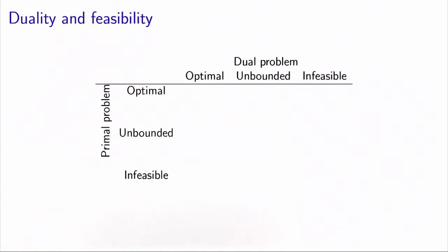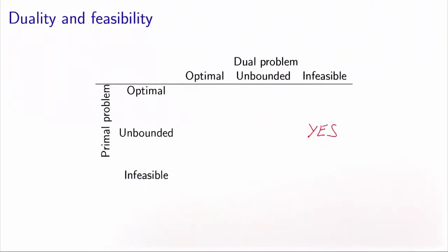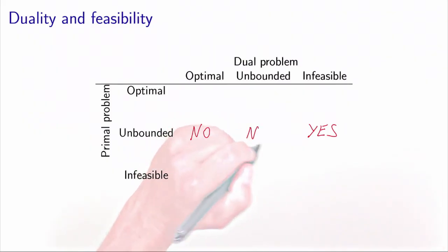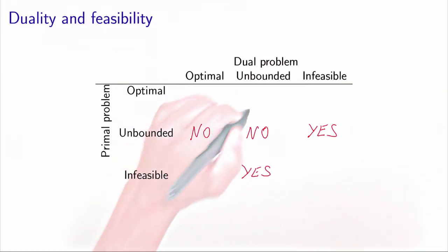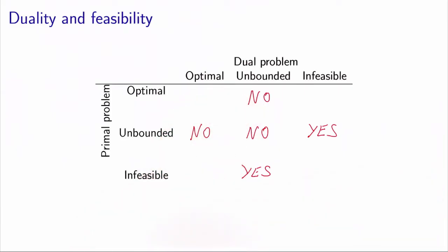We can look at the relationship between duality and feasibility using a table. The primal problem can either have an optimal solution, be unbounded, or be infeasible — three possibilities — and likewise for the dual. If the primal is unbounded, the dual must be infeasible and cannot be optimal or unbounded. Similarly, if the dual is unbounded, the primal must be infeasible. We will continue investigating these theoretical results on duality and fill in the rest of the table later on.